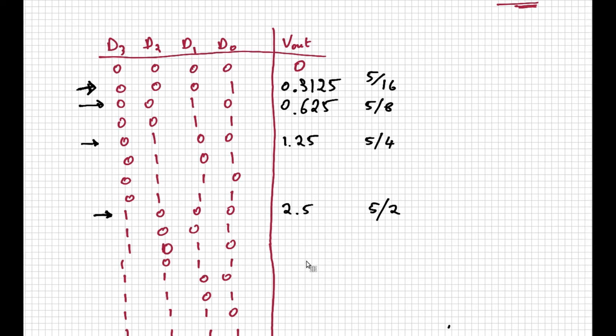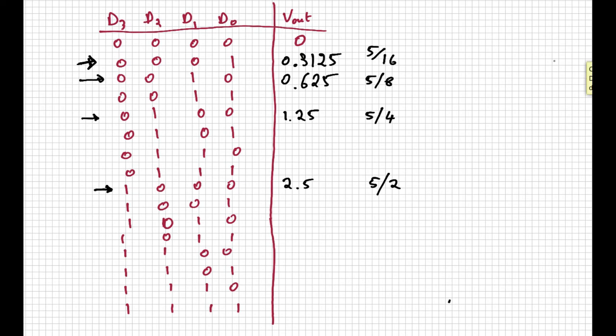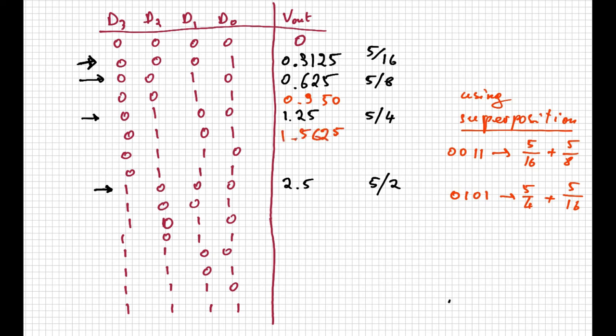To fill up all the other entries of the table, we can just notice that we are in the presence of a linear circuit, and because of that, we can apply the superposition principle to calculate all the other values of the table from the ones we already have, by adding them up appropriately. So, for 0011, we can add 5/16ths and 5/8ths, obtaining a value of 0.9375 volts. 0101 is obtained by adding 5/4ths and 5/16ths, which gives us 1.5625 volts. And following the same procedure, we can fill up the entire table.